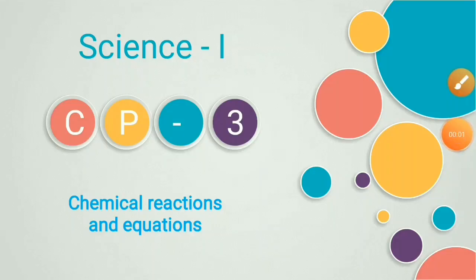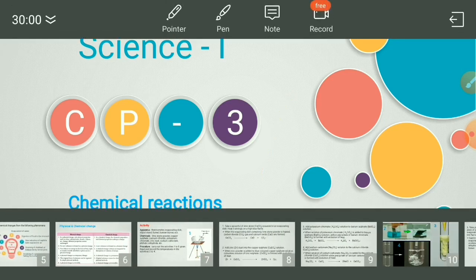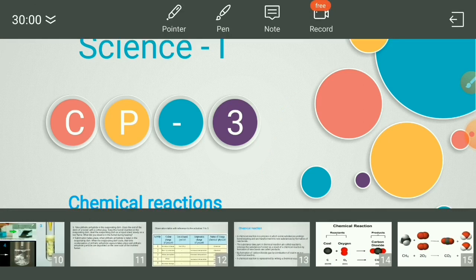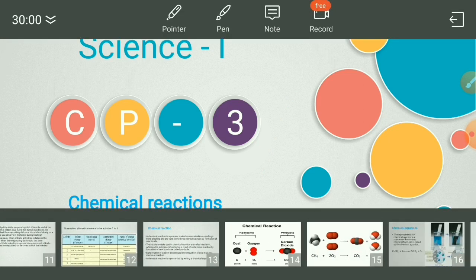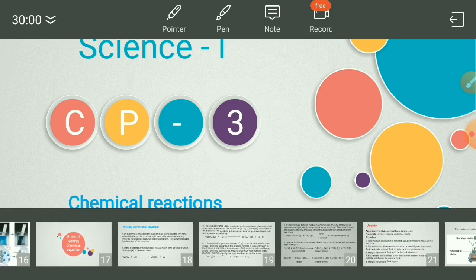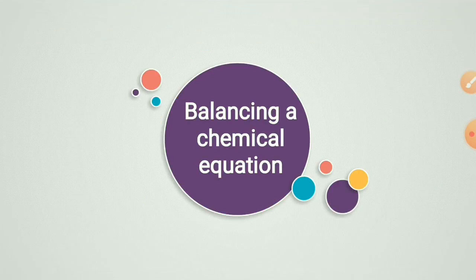Good morning students. We are studying Science, Chapter 3: Chemical Reactions and Equations. In this chapter we have completed chemical reactions, physical states based on activities, chemical reactions with examples, the chemical equation, and rules for writing the chemical equation. Now we are going to study balancing a chemical equation.